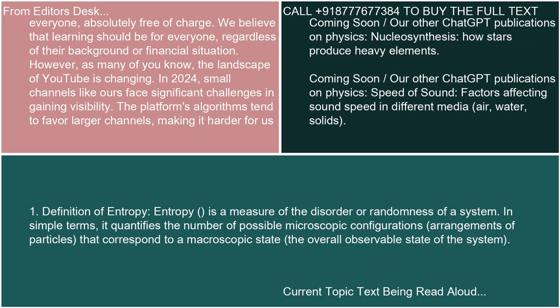1. Definition of Entropy: Entropy is a measure of the disorder or randomness of a system. In simple terms, it quantifies the number of possible microscopic configurations — arrangements of particles — that correspond to a macroscopic state, the overall observable state of the system.